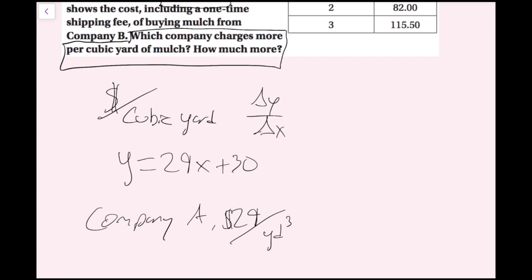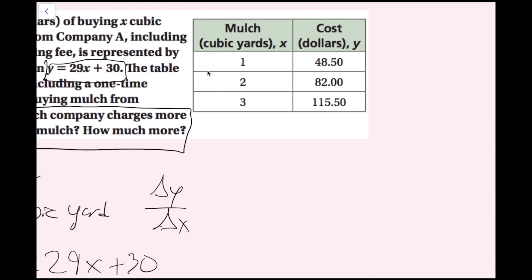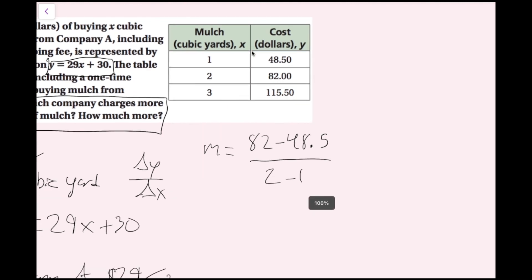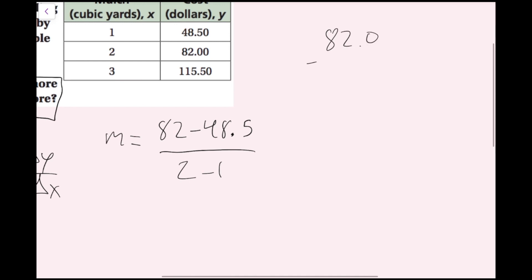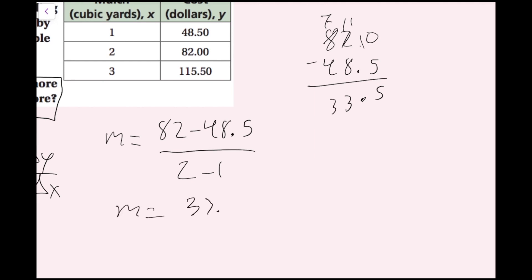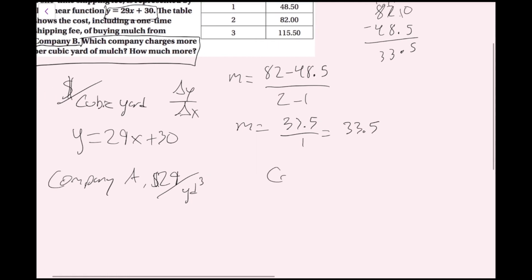Now I need to find the slope for company B using the table. Using y2 minus y1 over x2 minus x1: that's 82 minus 48.5 over 2 minus 1. Computing 82.0 minus 48.5 gives 33.5, and dividing by 1 gives 33.5. So company B charges $33.50 per cubic yard.